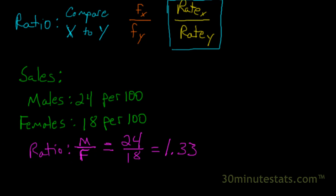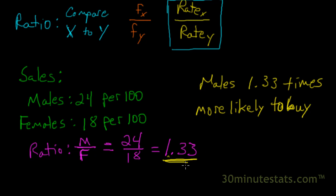So what this is saying then is that males are 1.33 times more likely to buy than females. And so this ends up being our ratio of male purchases to female purchases. So for every female purchase that's made, we get 1.33 male purchases.